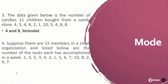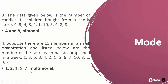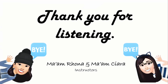Lastly, suppose there are 15 members in a small organization and the number of tasks each has accomplished in a week are: 1, 3, 5, 3, 4, 2, 1, 5, 6, 7, 10, 8, 2, 9, and 7. The numbers 1, 2, 3, 5, and 7 each appeared twice, making them the most frequently occurring numbers. Since there are 5 modes, this is considered multimodal. And that's it for the measures of central tendency for ungrouped data. Thank you guys for listening and we hope that you learned.